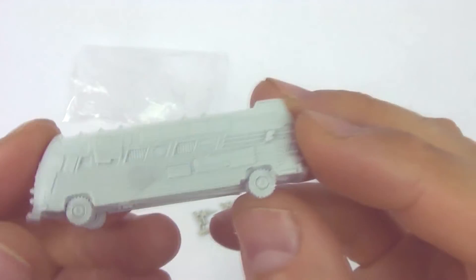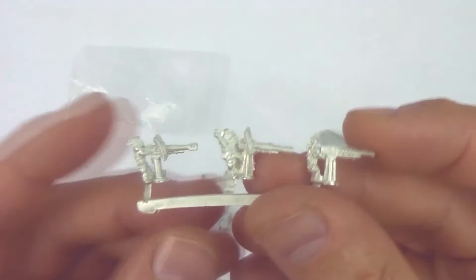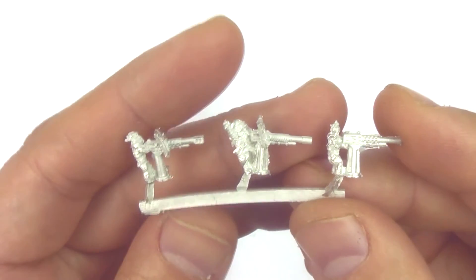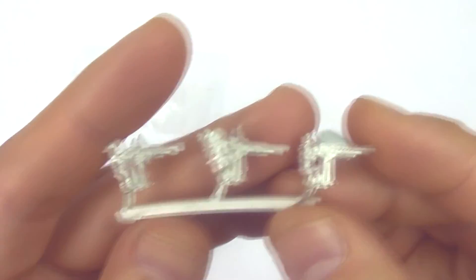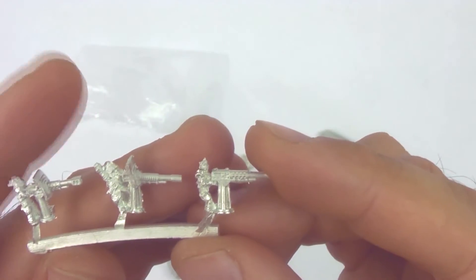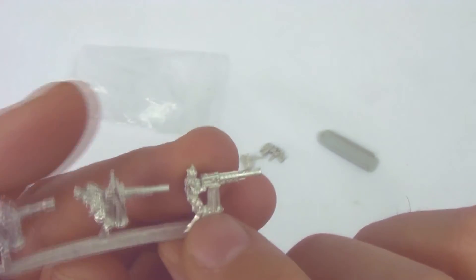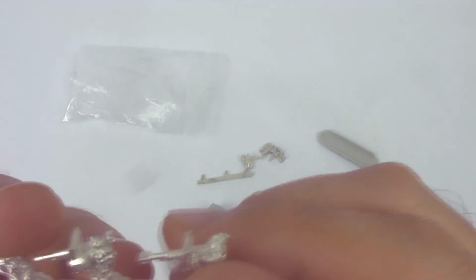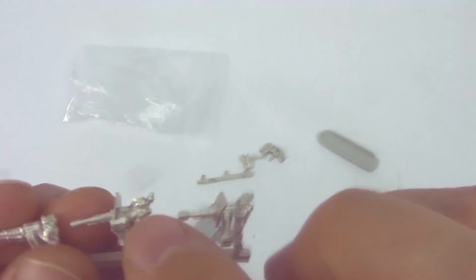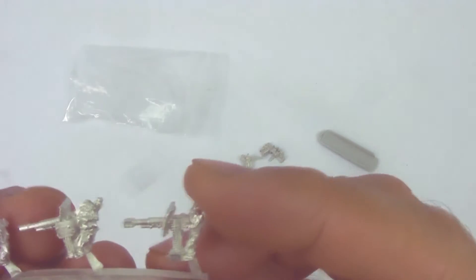Just for a closer look at these guys, you get six of these gunners per pack and they're in different poses. This guy's sort of squatting, this guy's standing, I'm not sure what this guy's doing, looks like he has a seat or something. There's a little bit of flashing but no big deal.